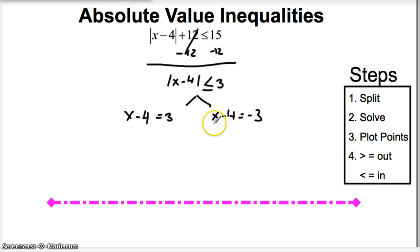So for now we're just going to put equal signs, and this is going to give us our critical points. Alright? From here we solve. So we get x is equal to 7, we add 4 to both sides, and x is equal to 1. Those are our critical points.